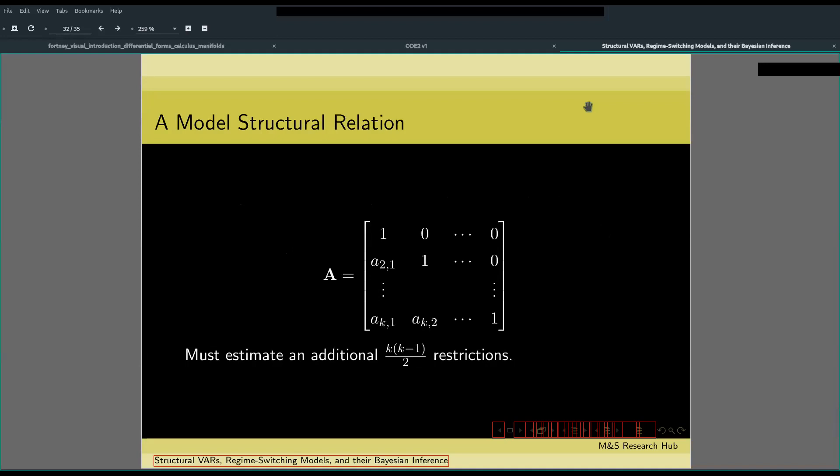The matrix A is defined as so, where the diagonal is composed only of ones and the lower triangular part has this number of additional restrictions to estimate.